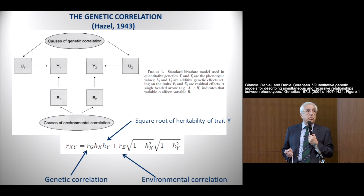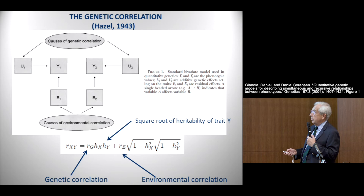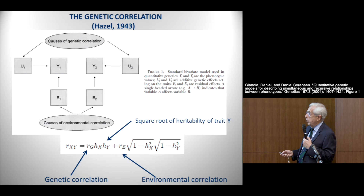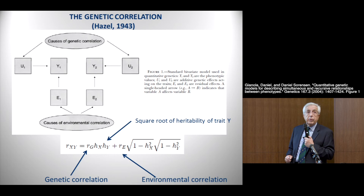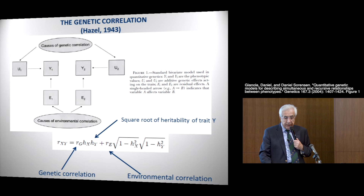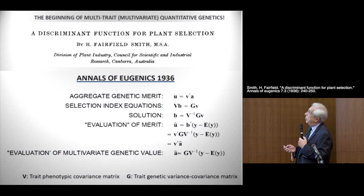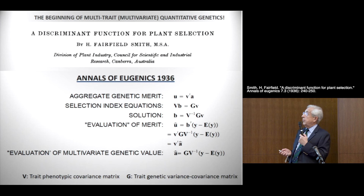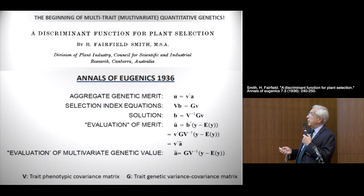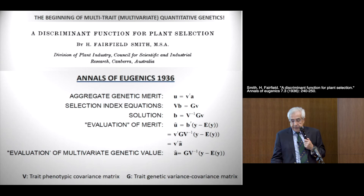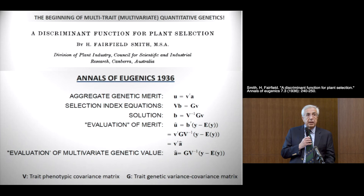This correlation may be due to either genetic associations — factors that commonly control both traits — as well as environmental associations. Hazel, an Australian, in 1936 developed the concept of the phenotypic correlation. This equation gives a representation of how genetic causes and environmental causes relate to each other, where H2X and H2Y are the heritabilities of the two traits. The same idea was developed in Australia by Fairfield Smith in 1936, in plant breeding, and published in the Annals of Eugenics. He used a notion from Professor Fisher and called it a discriminant function, but what he was doing is something that today we call best linear prediction, which was formalized by Henderson. These were important precursors of multiple-trait analysis, which is something we all do in animal and plant breeding.